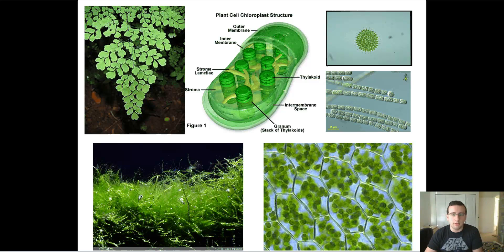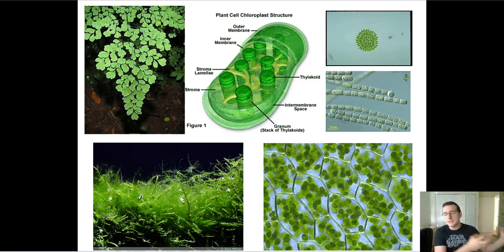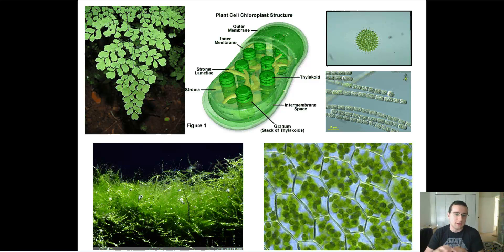Here you see a picture of the most common type of autotroph that people think of when they think of something that's a producer, and they are called phototrophs. Photo means light. Phototrophs means organisms that can make energy from the sun into organic energy trapped inside of sugar.